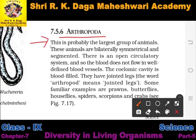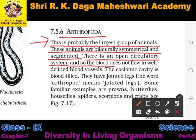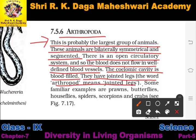The next category is Arthropoda. This is probably the largest group of animals. These animals are bilaterally symmetrical and segmented. There is an open circulatory system, so the blood does not flow in well-defined blood vessels. The coelomiccavity is blood-filled. They have jointed legs — the word 'arthropod' means jointed legs.